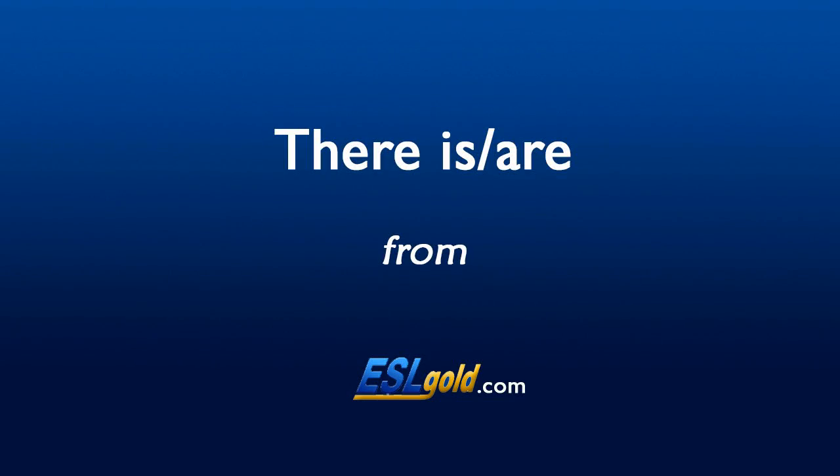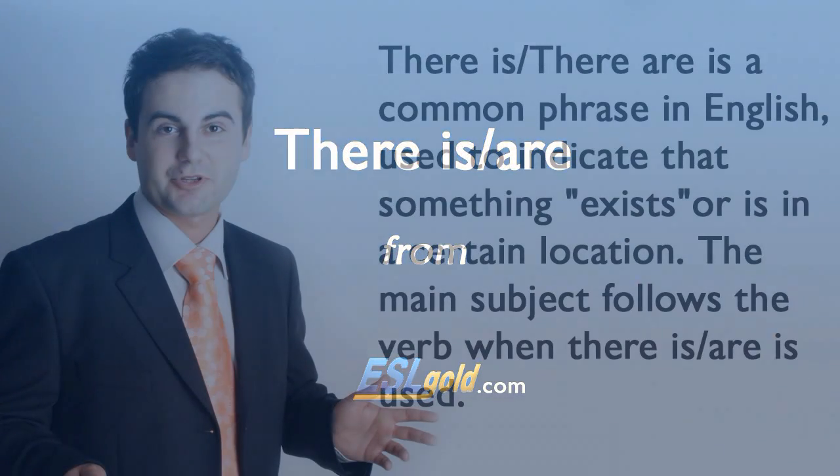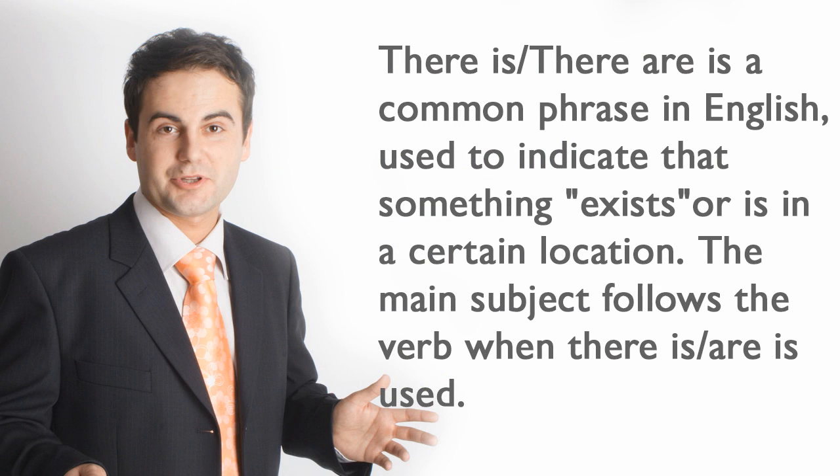There is or there are. There is or there are is a common phrase in English, used to indicate that something exists or is in a certain location. The main subject follows the verb when there is or there are is used.